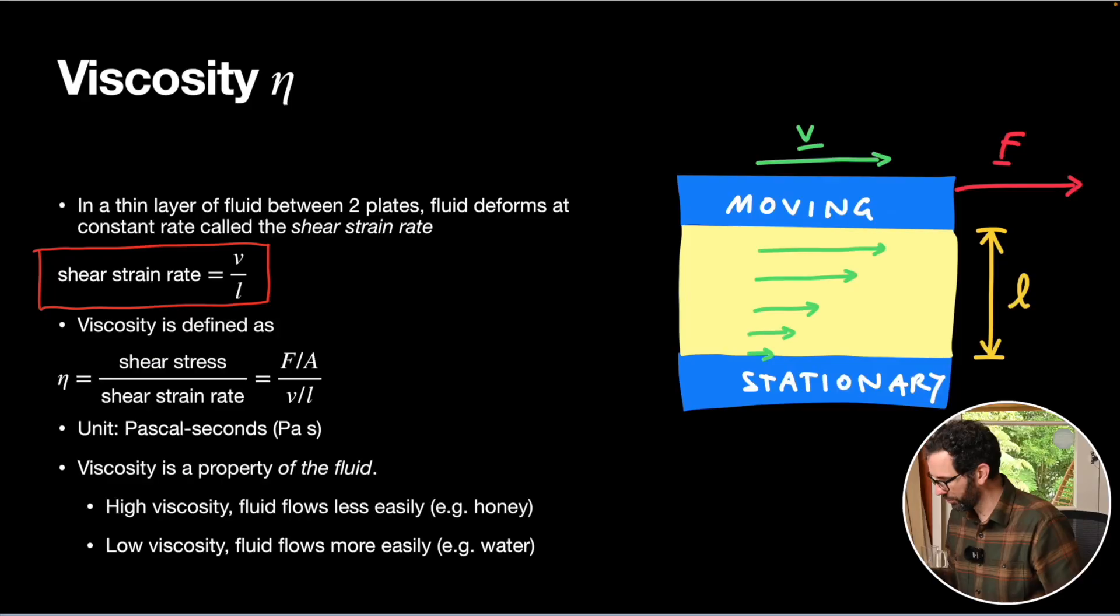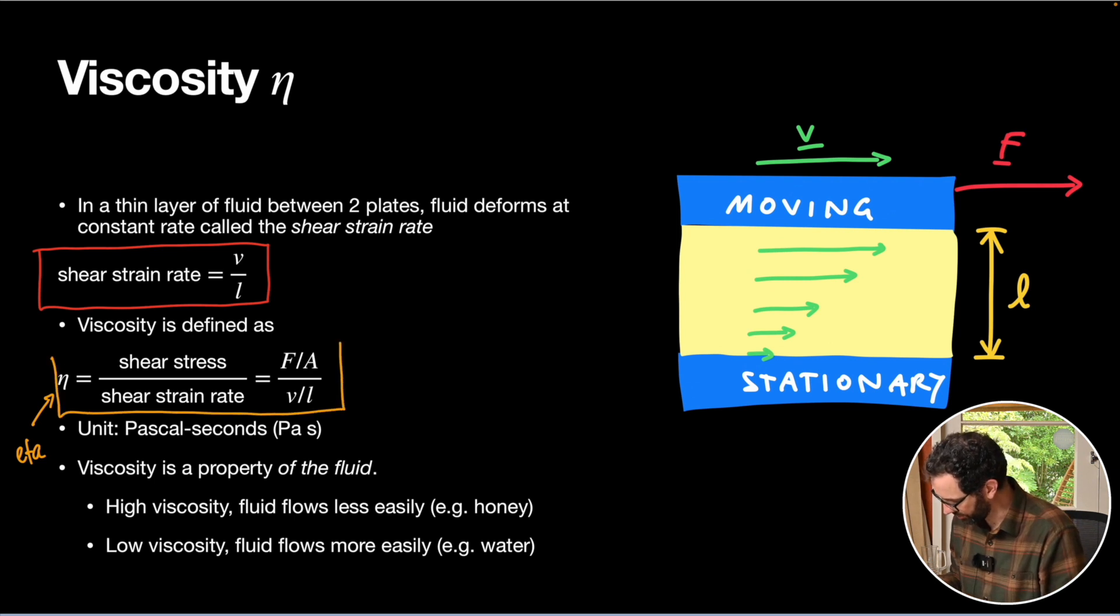We can use this to define our viscosity. We take the viscosity, which is yet another Greek symbol, this one is called eta. Our viscosity is equal to the shear stress, that's our F over A from before. So the area is the area across the top surface, and we divide it by our shear strain rate instead of by our strain.